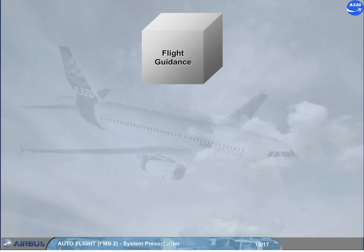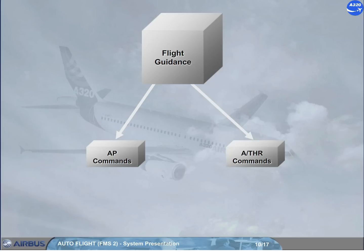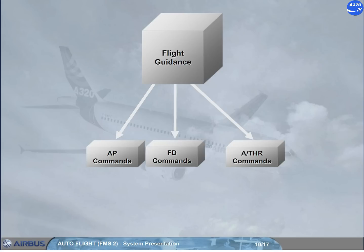The flight guidance part of the FMGS provides autopilot commands to automatically control pitch, roll, and yaw. Autothrust commands to automatically control thrust. Flight director commands for the pilot to control the pitch, roll, and yaw.